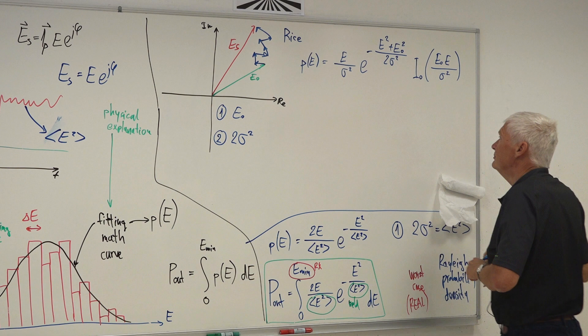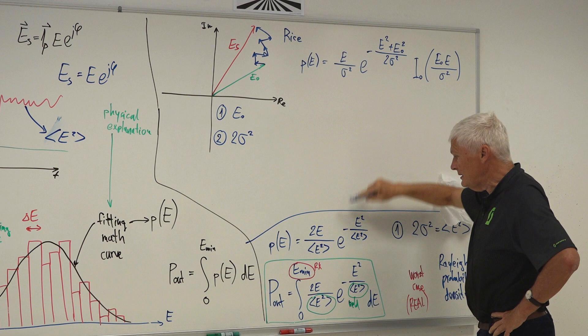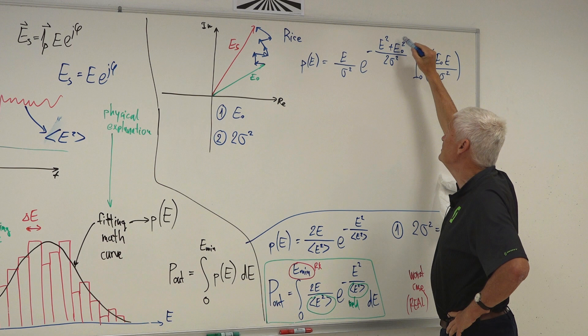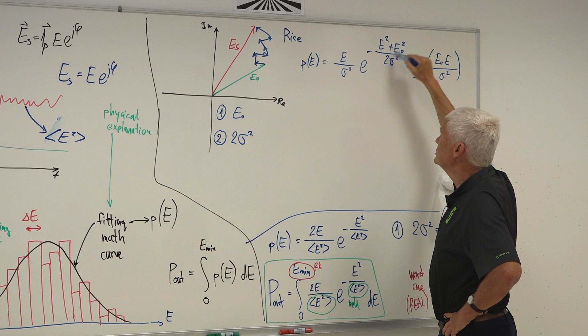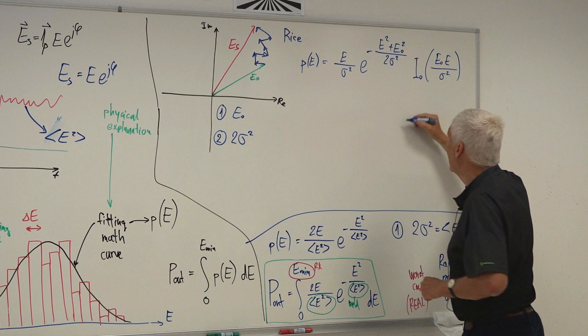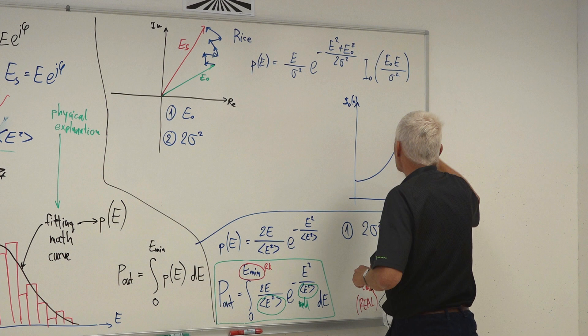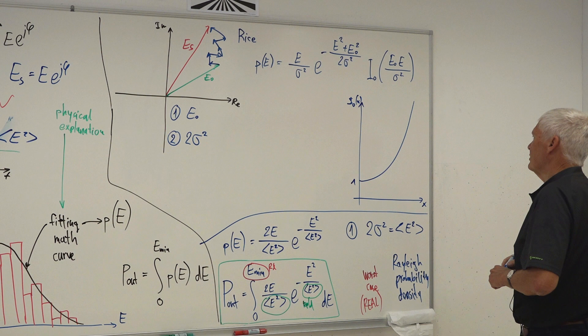This is the formula for the Rice distribution. The Rice distribution is quite similar to the Rayleigh distribution. There is a lower probability density due to the additional E0 term in the exponent, but we get a compensating contribution from the Bessel function I0. If you recall from mathematics, I0(x) is a function that starts with value 1 at argument zero and rises like an exponential. This additional function comes from performing a similar integral.